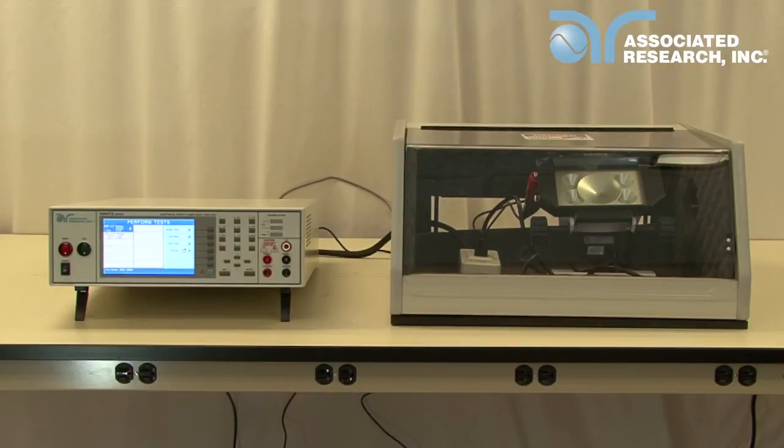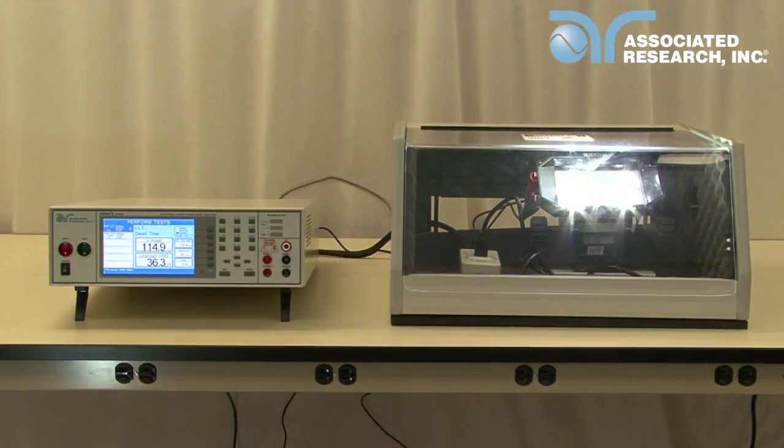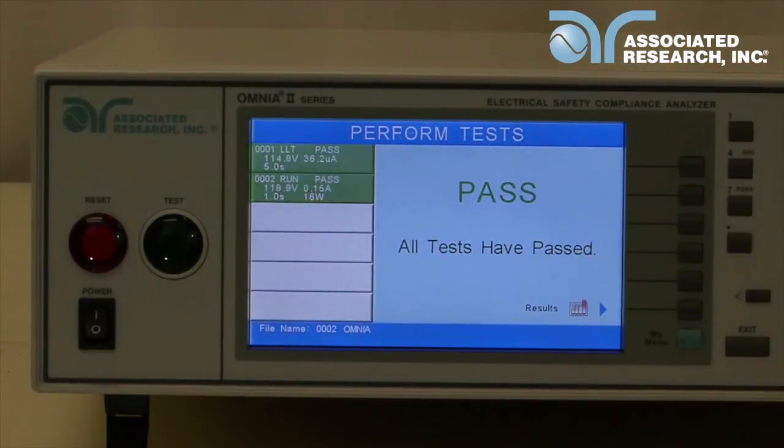You are now ready for testing the DUT. Close the DUT enclosure door and press the test button. Once the test is complete, you can review your results by pressing the results soft key.